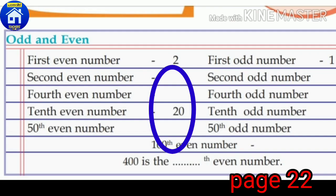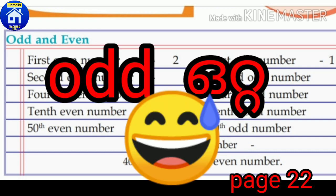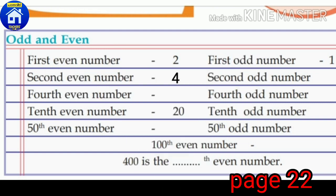Please take page number 22: odd and even numbers. The first even number is 2, the second even number is 4, the fourth even number is 8, the 10th even number is 20, the 50th even number is 100, and the 100th even number is 200.